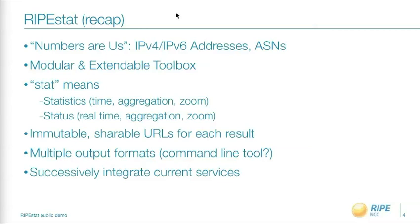RIPE Start mainly means that we provide you with statistics, meaning we can go back in time and query all the data we are collecting. We can have a user view on the data, either aggregated or on different levels of detail with zooming. We also provide you with status information covering real-time data via the RIPE Start application. Another point is permalinks — each result you receive on RIPE Start will be associated with permalinks, making it easy to share information.